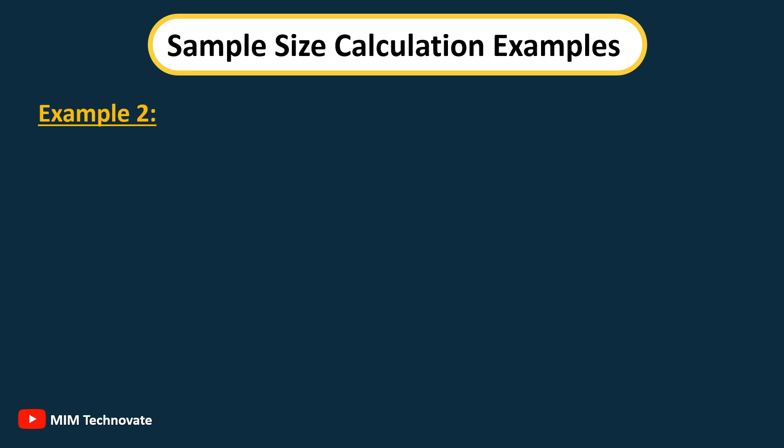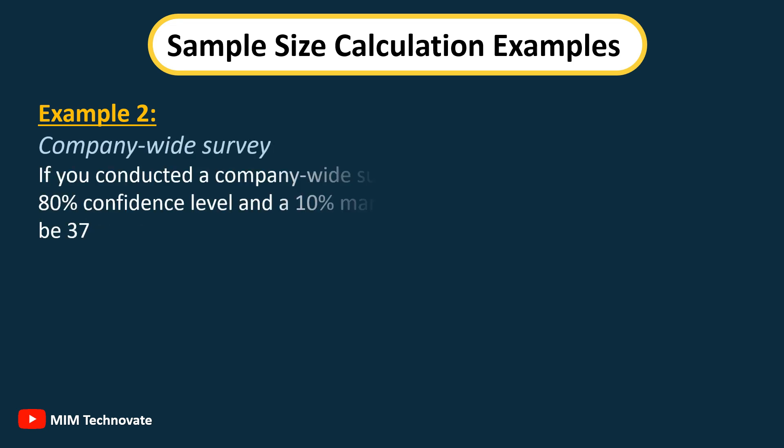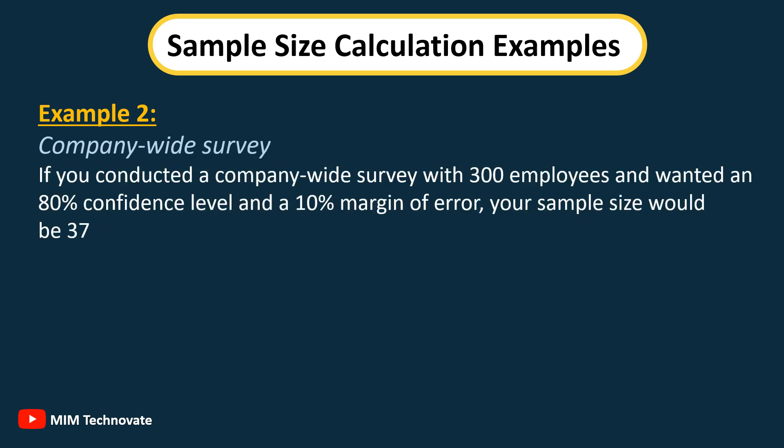Example 2: in contrast, if you conducted a company-wide survey with 300 employees and wanted an 80% confidence level and a 10% margin of error, your sample size would be 37.